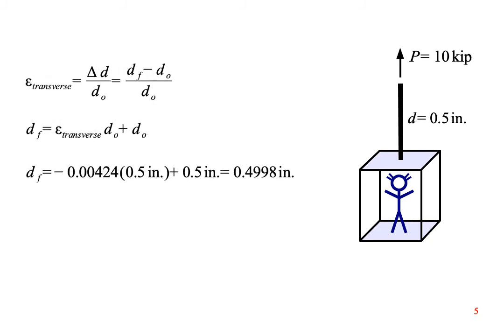We can use the transverse strain to figure out the change in diameter of the rod. The definition of strain is change in a dimension divided by its initial dimension. In this case, the dimension is diameter. We find that the final diameter is 0.4998 inches, which is 2 tenths of a thousandth of an inch smaller than the initial diameter.